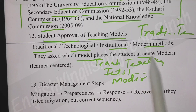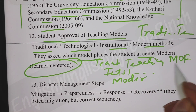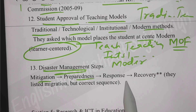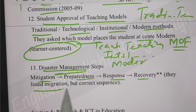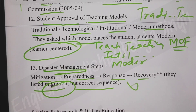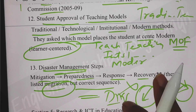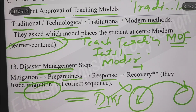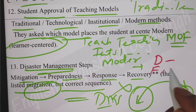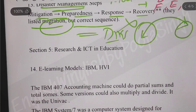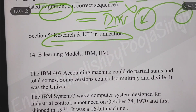There was also a question on disaster management steps: Mitigation, Preparedness, Response, Recovery. They listed 'migration' but that is incorrect - migration means moving from one city to another, which is not a disaster management step. The correct sequence does not include migration. From this we can infer that in future we need to cover disaster management - floods, earthquakes, seismic waves, and all related topics.